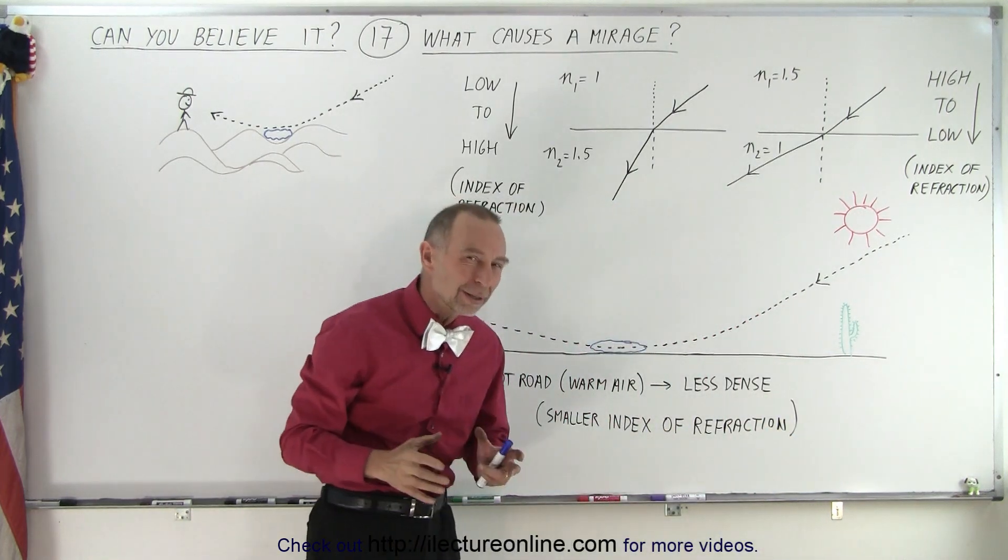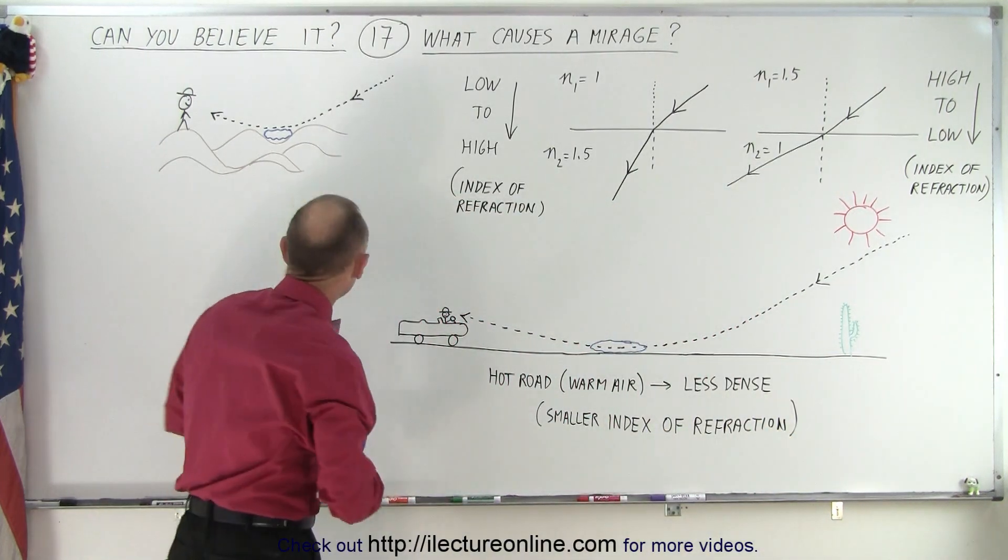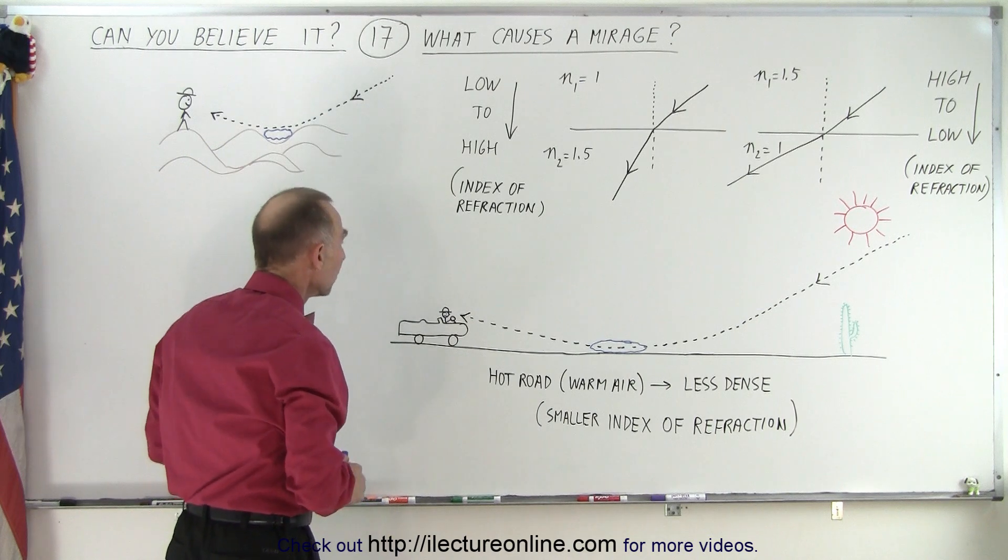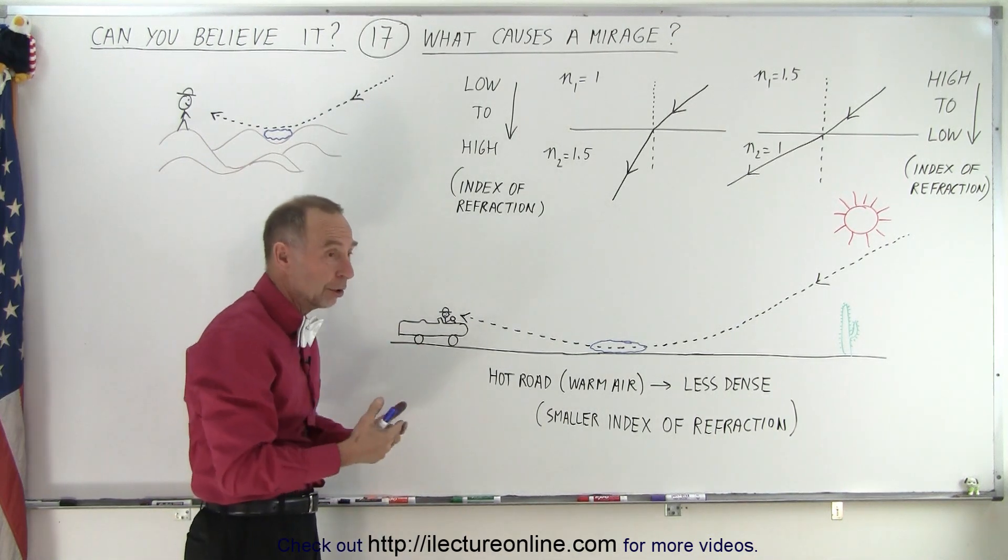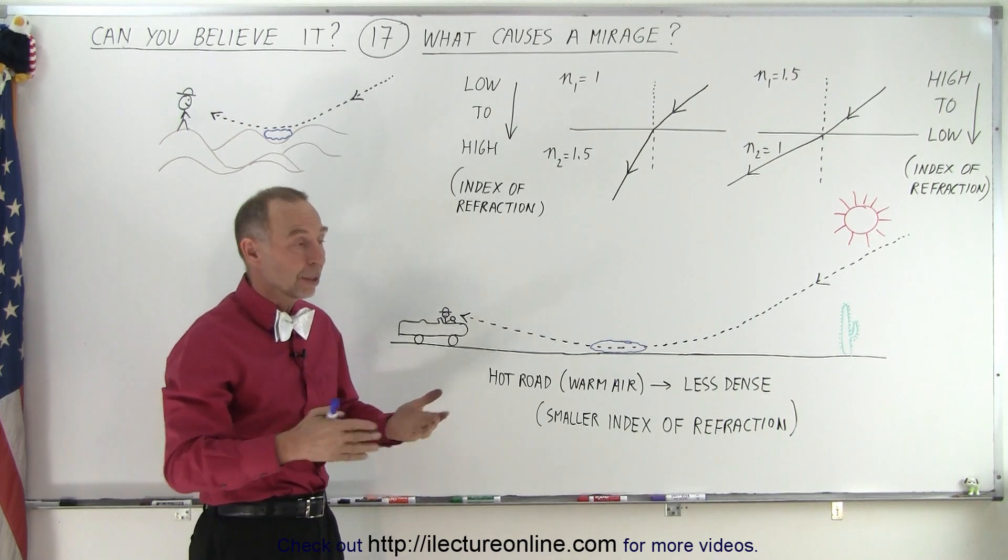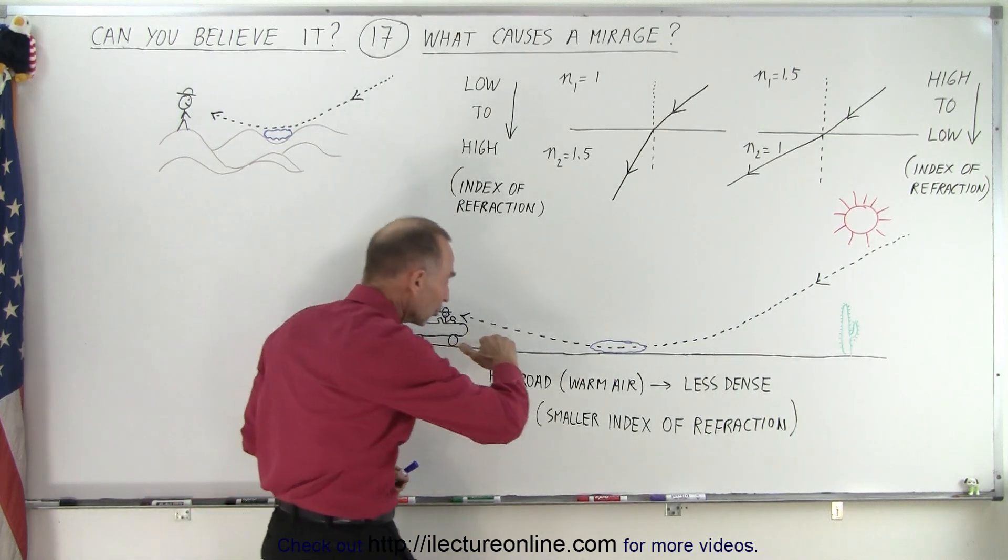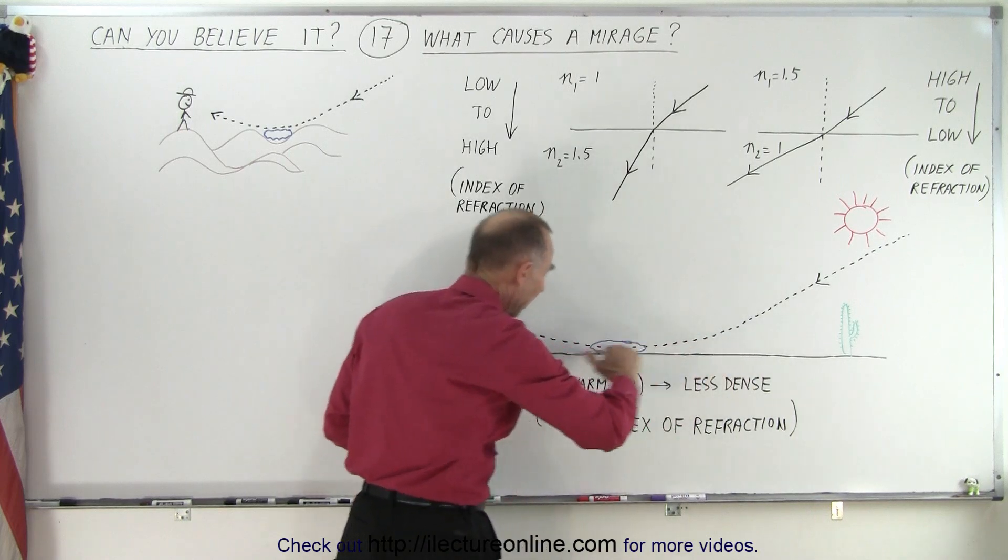So what happens? Most of us probably never experienced something like this in the desert, but we may have experienced something similar when you drive a car on a very hot day. When the road is very hot, the air just above the road gets very, very hot. The hot road causes warm air to exist right above it.